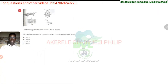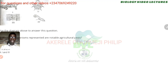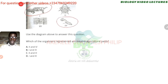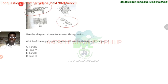Using the diagram above — which of the organisms represented are notable agricultural pests? There are two of them: the grasshopper and the caterpillar of a butterfly. In the larval form, the caterpillar is very destructive to plants, eating up leaves and all that. The answer is going to be one and four — which is B.